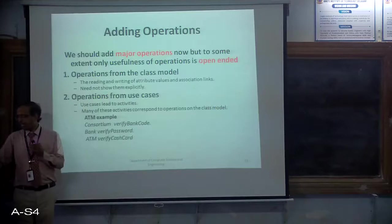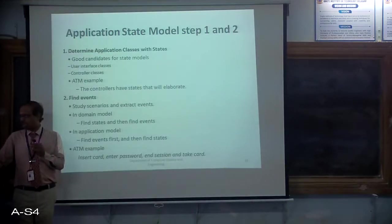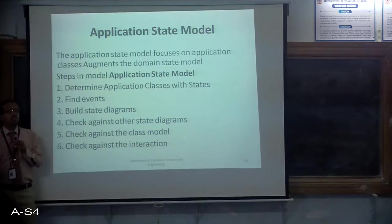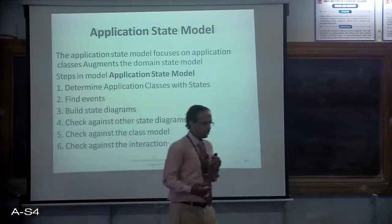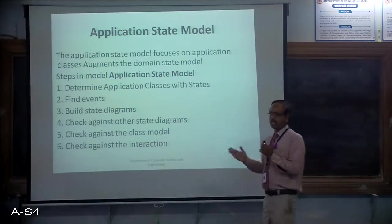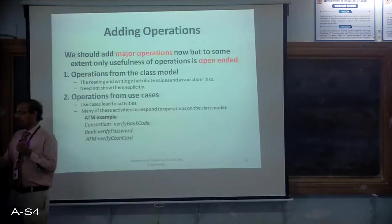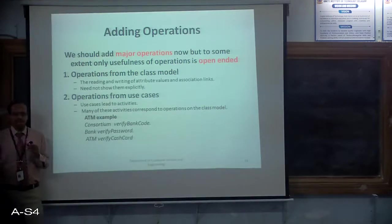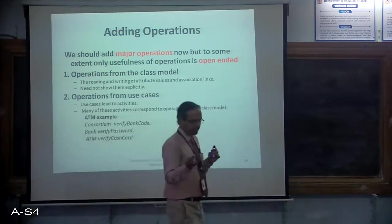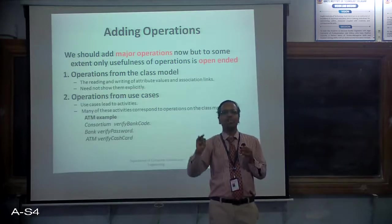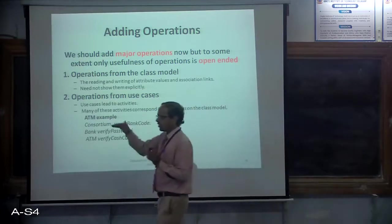The application state model can be implemented in five to six steps: determining application classes, finding events and scenarios — considering mainly user interface classes and controller classes — building the state diagram, then checking this state diagram against other state diagrams, other classes, and other interaction models. After this process, we have the application classes, their state models, and interaction models — but we are not done yet. There is still work to do: adding operations.